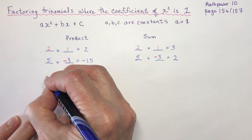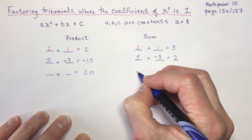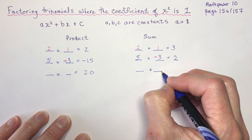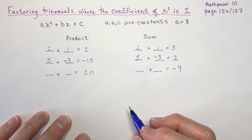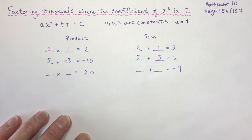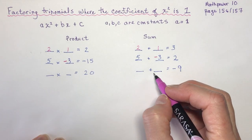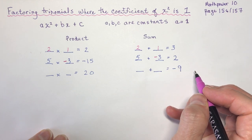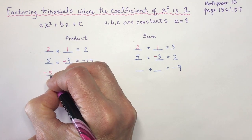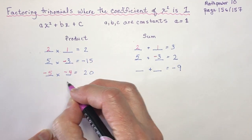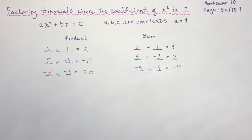What two numbers multiply together to give you 20 and also add to negative 9? Two negatives make a positive, and two negatives added together give you another negative number. So this is negative 5 and negative 4 — they multiply to 20, and negative 5 plus negative 4 gives negative 9.